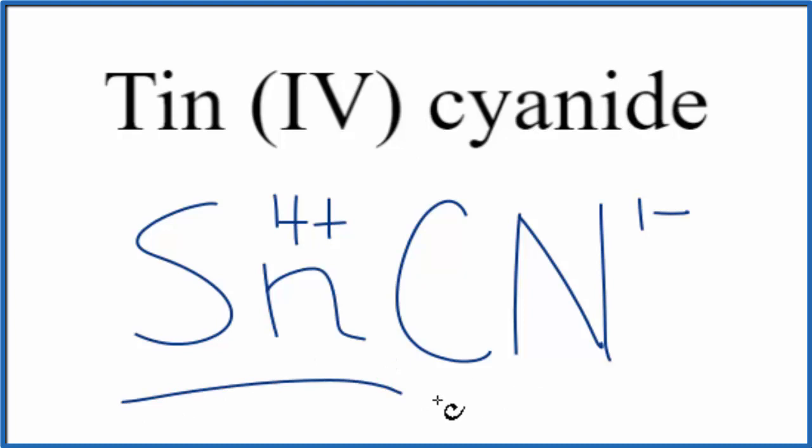So we have our metal, tin, and then this polyatomic ion. This is a group of nonmetals here. So this is going to be an ionic compound.